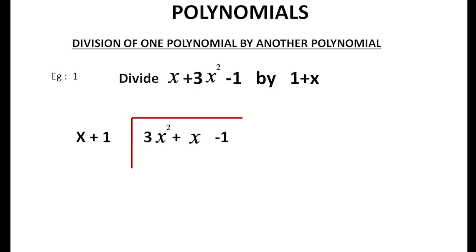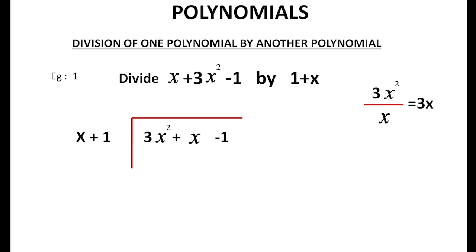Now we will divide the dividend by the divisor. We are setting up the polynomial long division. We divide the dividend 3x squared plus x minus 1 by the divisor x plus 1. Now, 3x squared minus x — how do I get this?